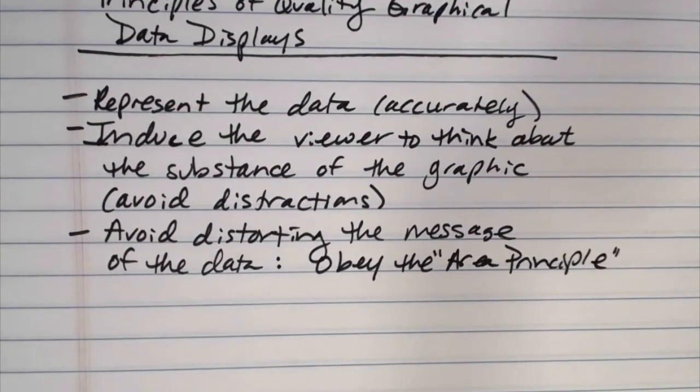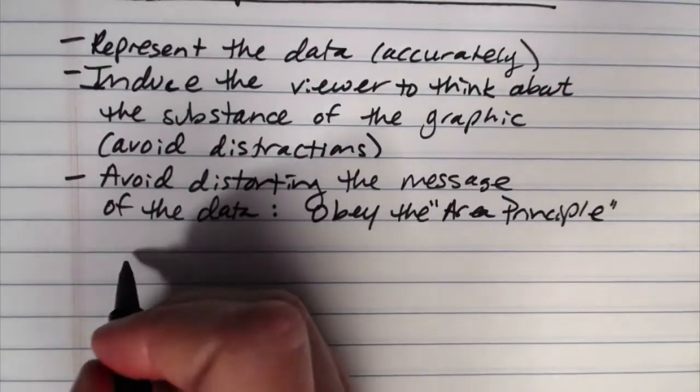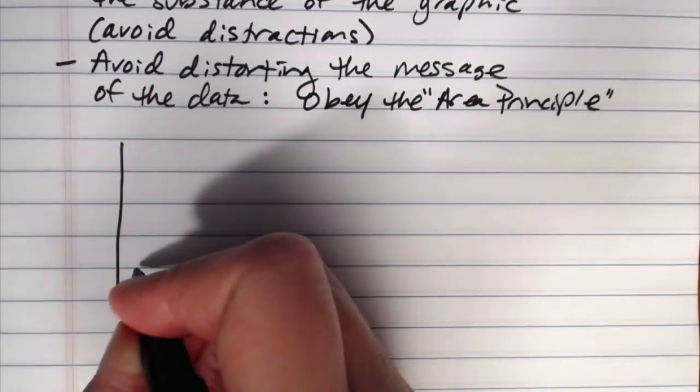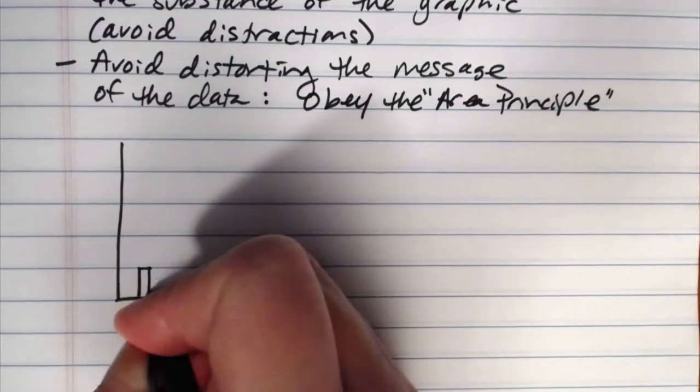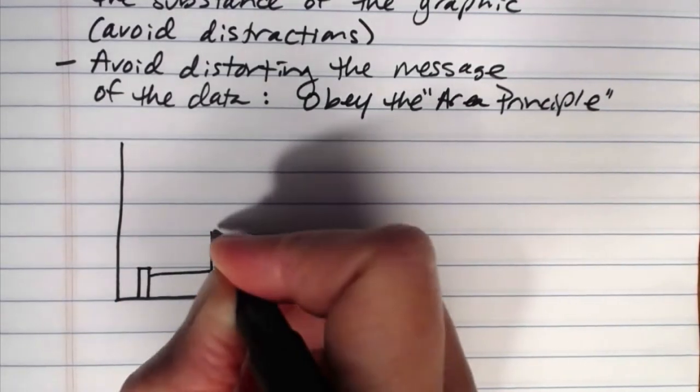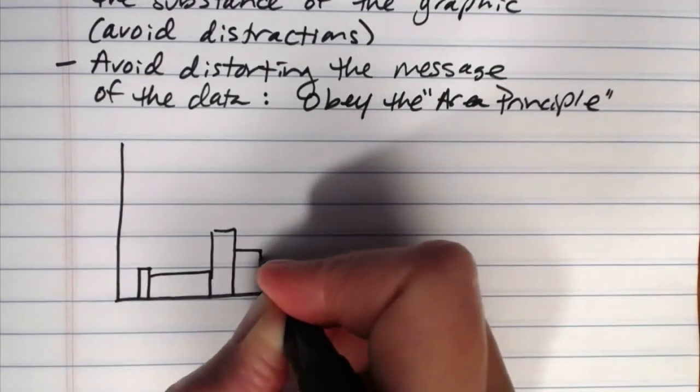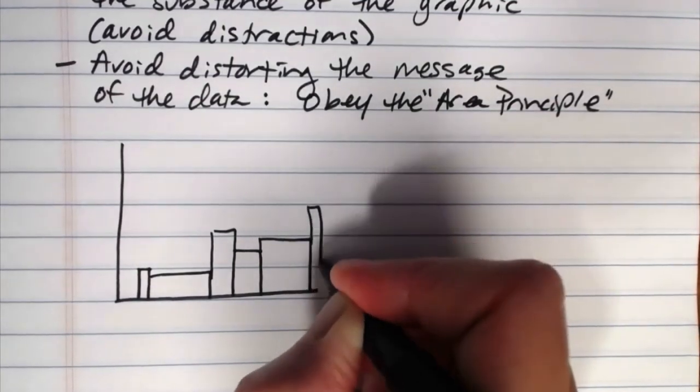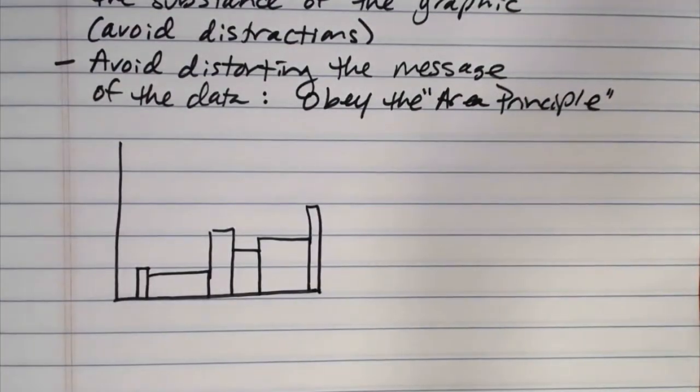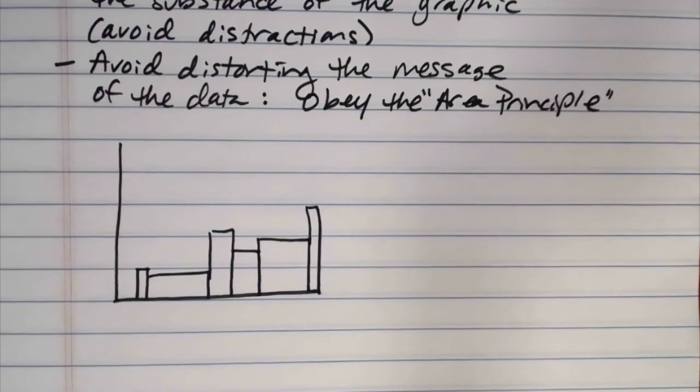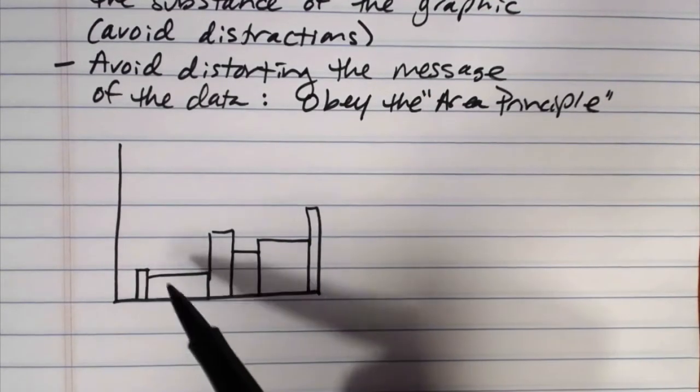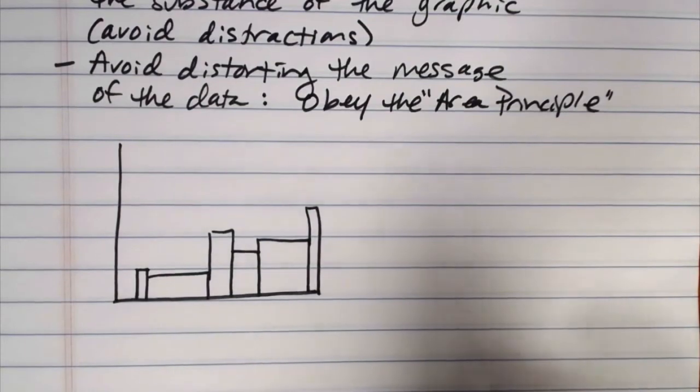Obey the area principle. And I'll give you a couple of examples of this whole area principle thing. I'm going to make two histograms here, side by side. Here's an example of a data display that wouldn't be obeying the area principle. One of the interesting tricks of the human psyche is that we tend to interpret the area of a segment of a graph as being proportional to the amount of data that is contained within that segment.